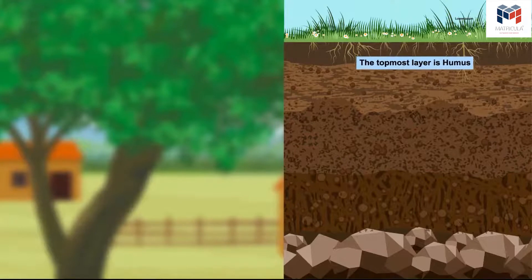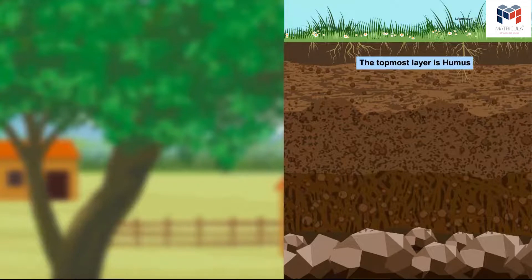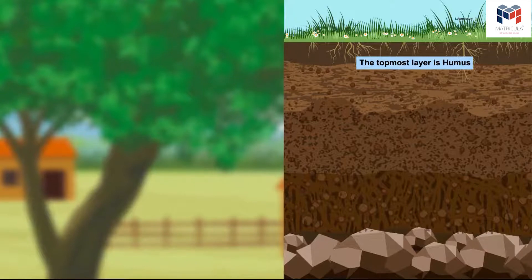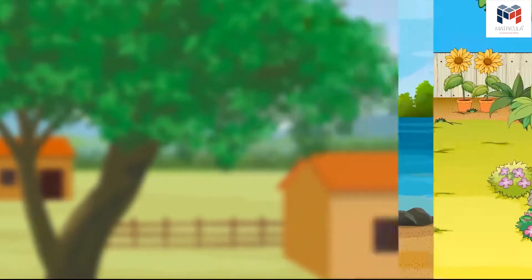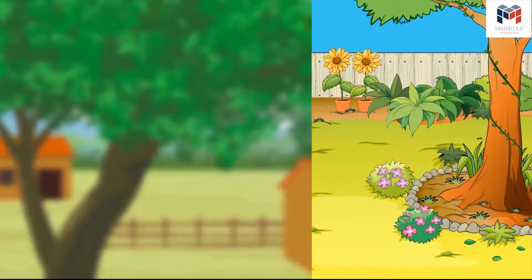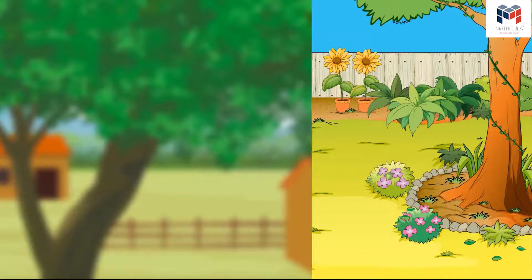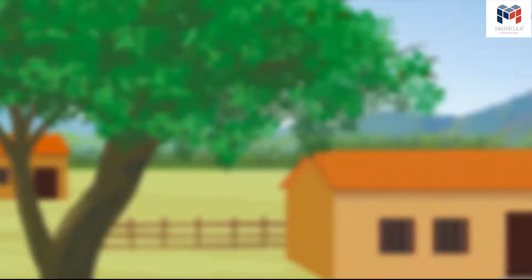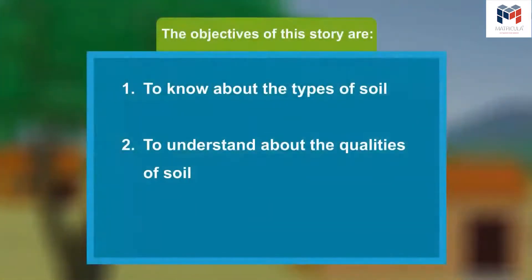Correct, it is humus, which is made up of dead and decaying matter. I have a question: is the soil similar at all places, or is the soil different at riverbeds, gardens, etc.? Let us go and look for the answer in a village where two children are in conversation about the same question. The objectives of this story are to know about the types of soil and to understand the qualities of soil.